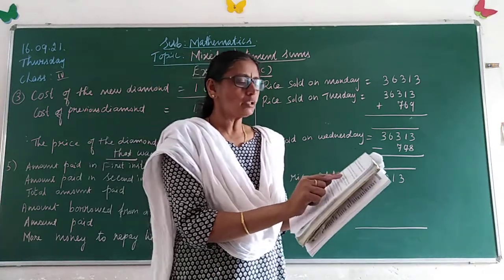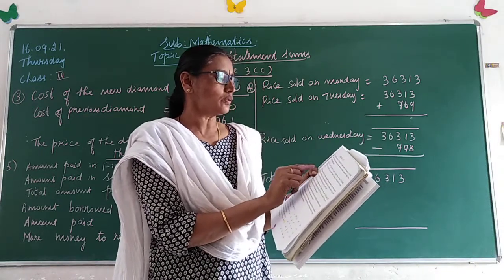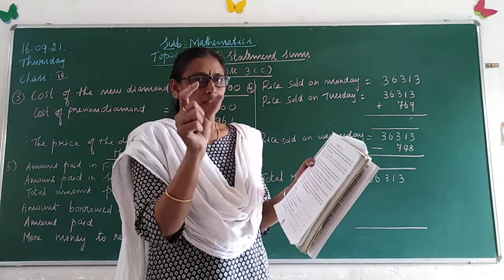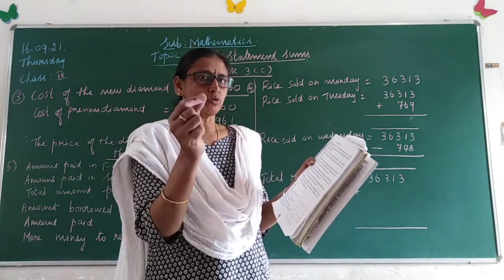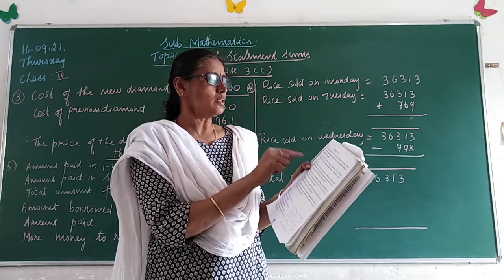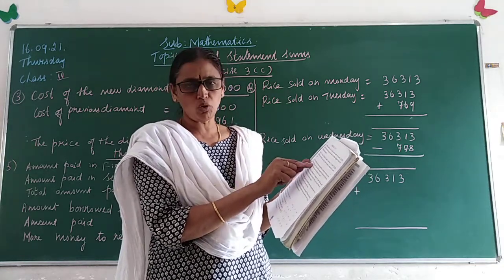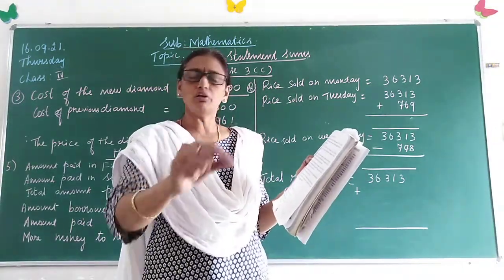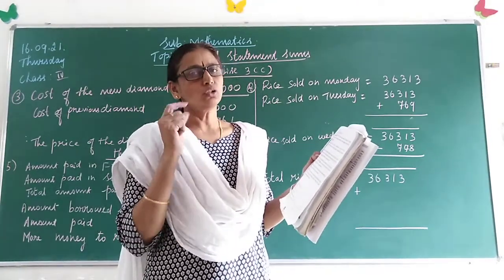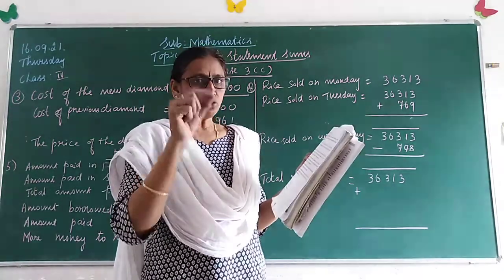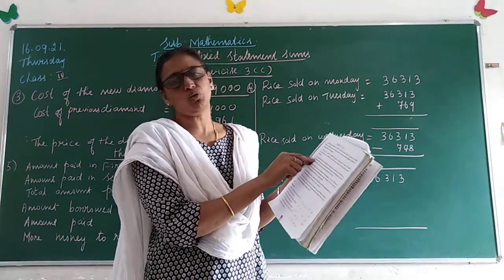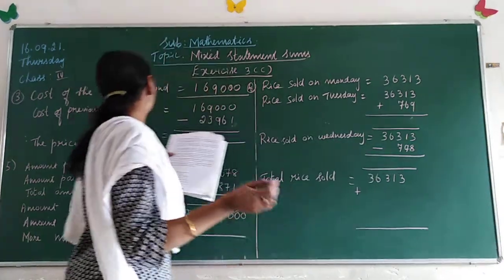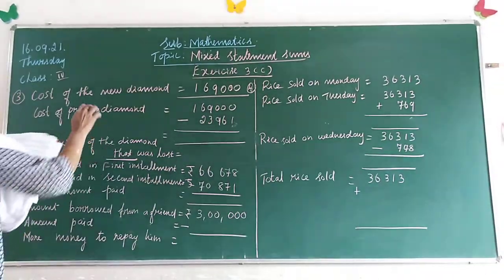The father bought another one that cost 23,961 more than the previous one. That means the new ring is more expensive. How much more? 23,961 more than the last one. So, how will you find the cost of the last one? You have to subtract from the new one — minus how much more.